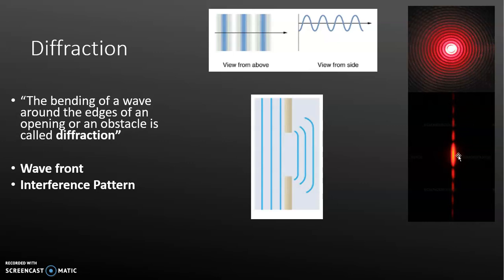Here in the center we have high intensity and then there are some interference patterns — a destructive interference pattern, a constructive interference pattern, destructive, constructive, and the light begins to dim. Another way to view this is in this top image: the center has the highest intensity and we have some destructive interference and some constructive, destructive, and then constructive. Keep this image in mind for when we talk about the car headlights again.